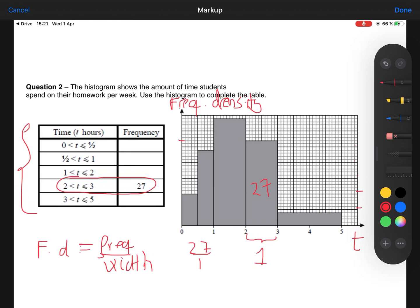Frequency density is not minutes, it's not height, it's nothing, it's just 1. So I can now scale my histogram.